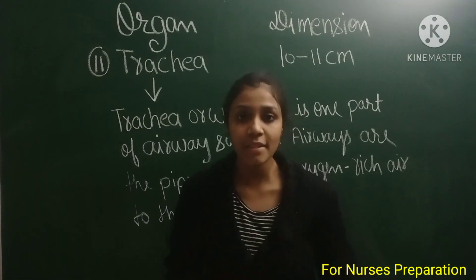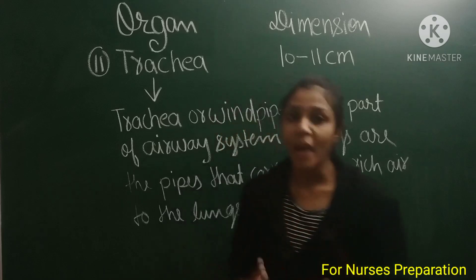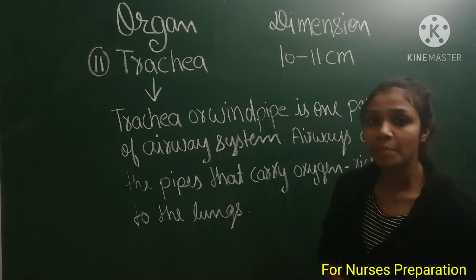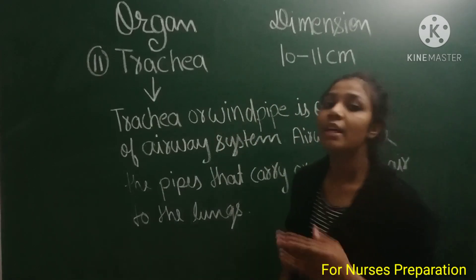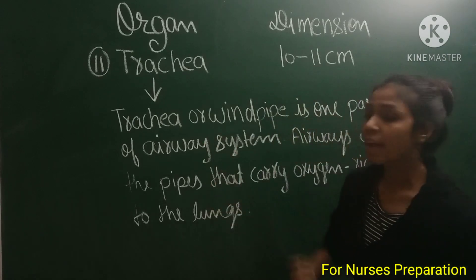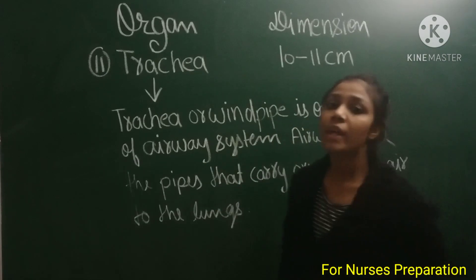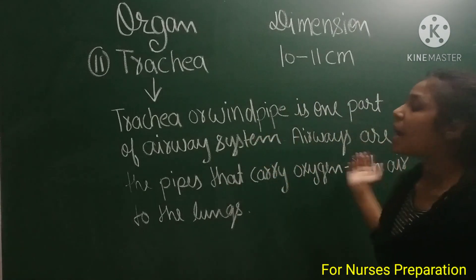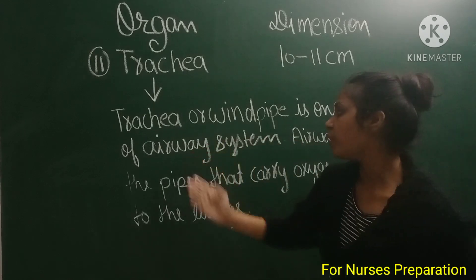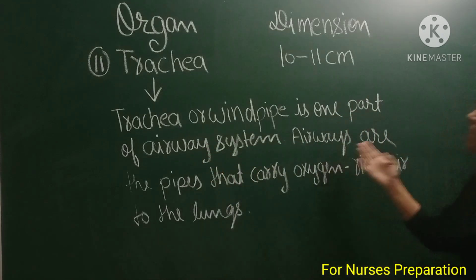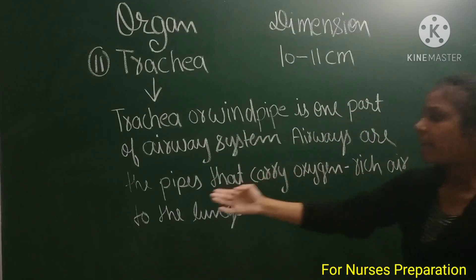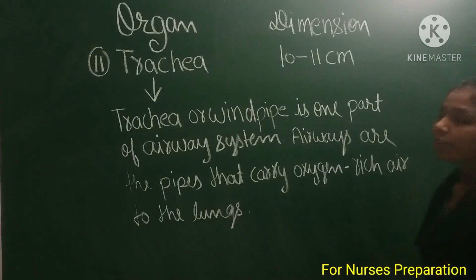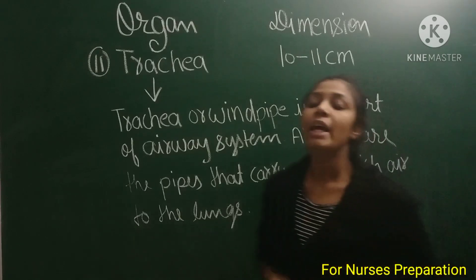Next is the trachea. The trachea is 10 to 11 centimeters in dimension. The trachea, or windpipe, is one part of the airway system. Airways are the pipes that carry oxygen-rich air to the lungs.